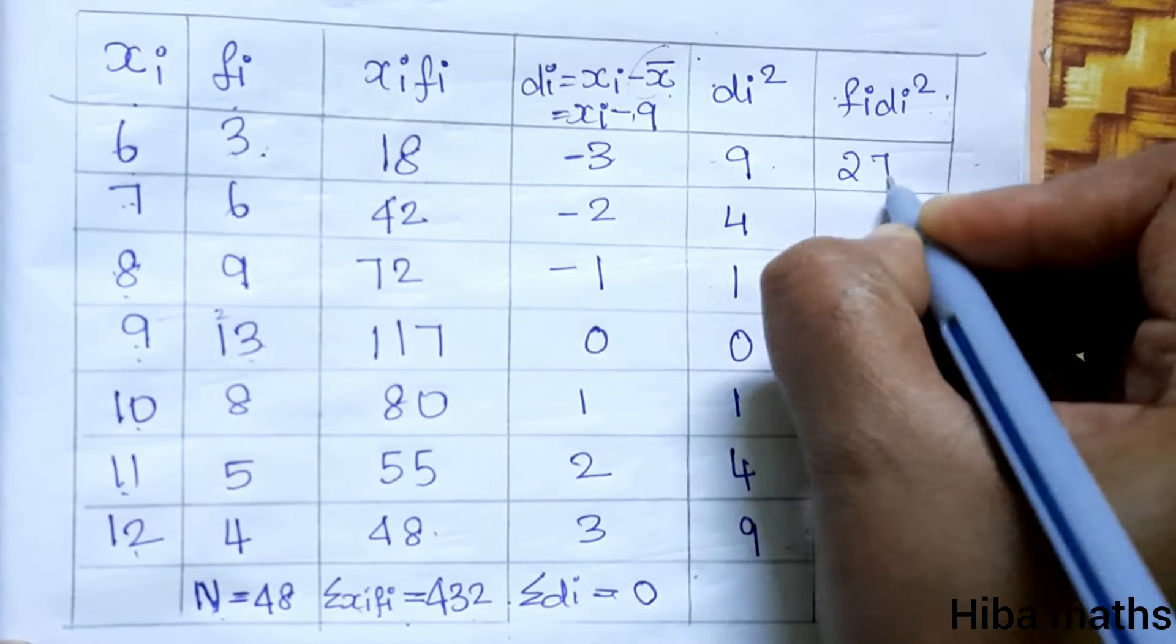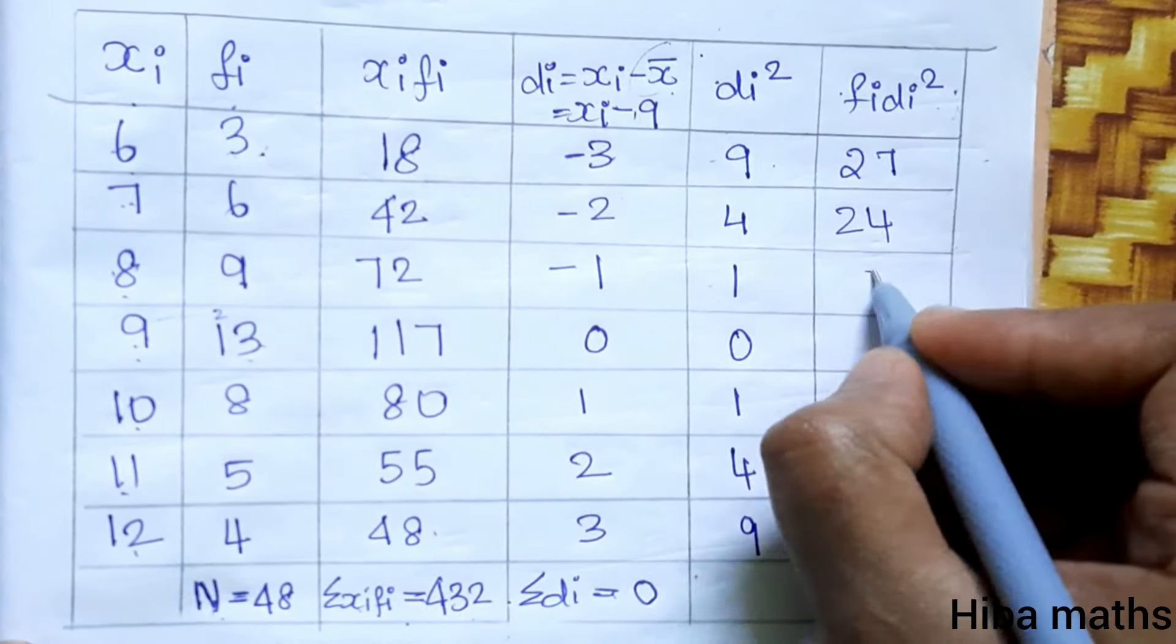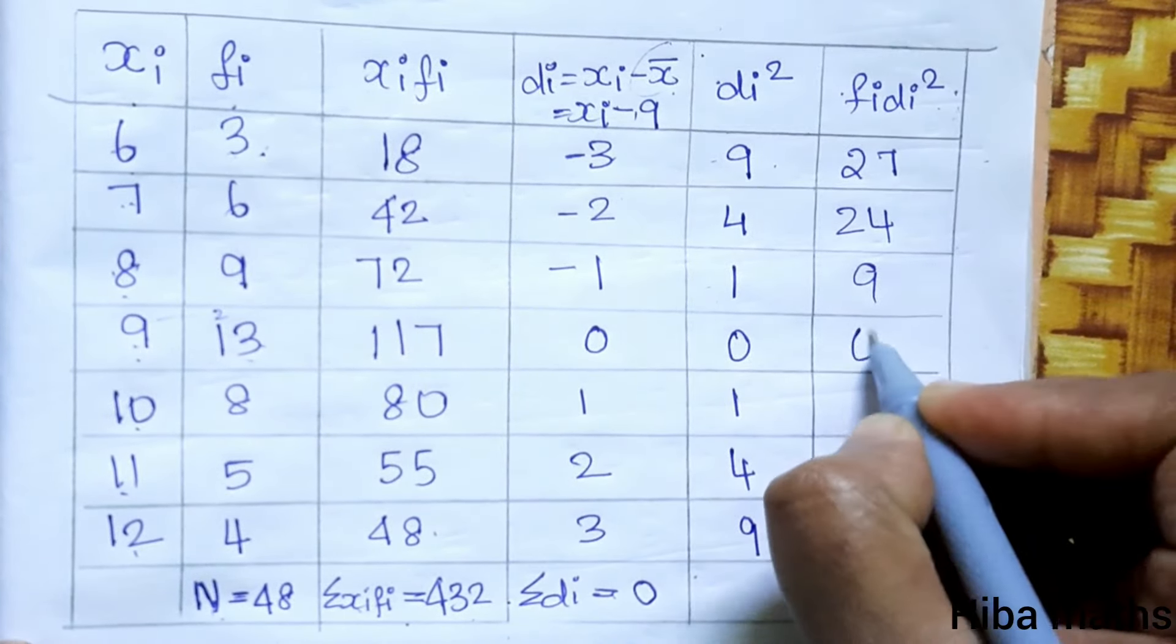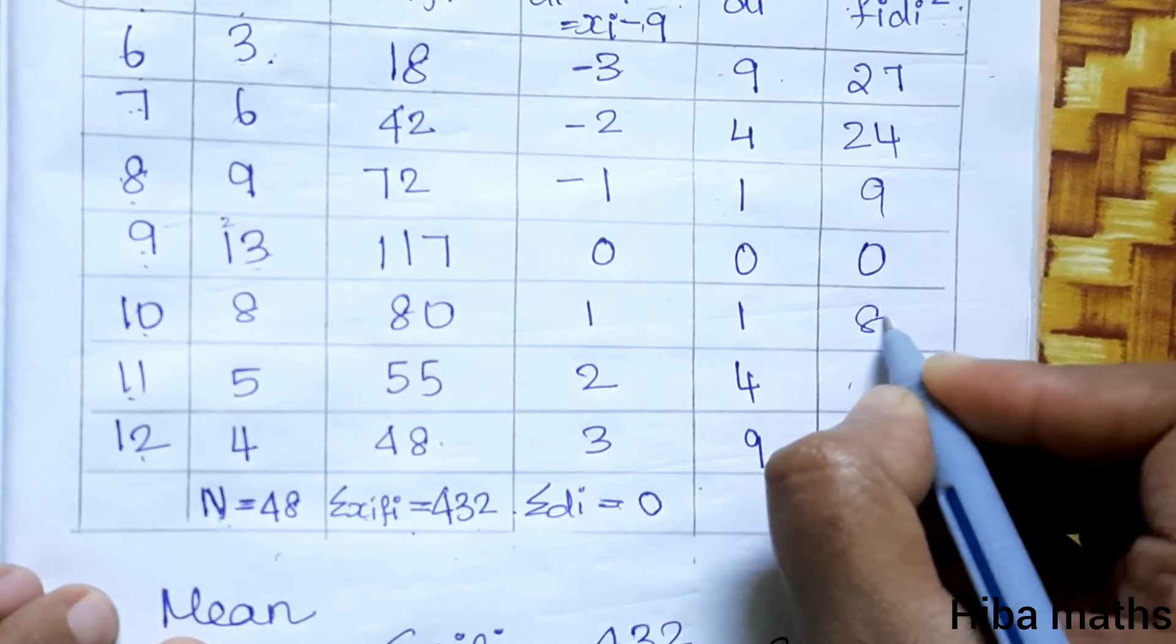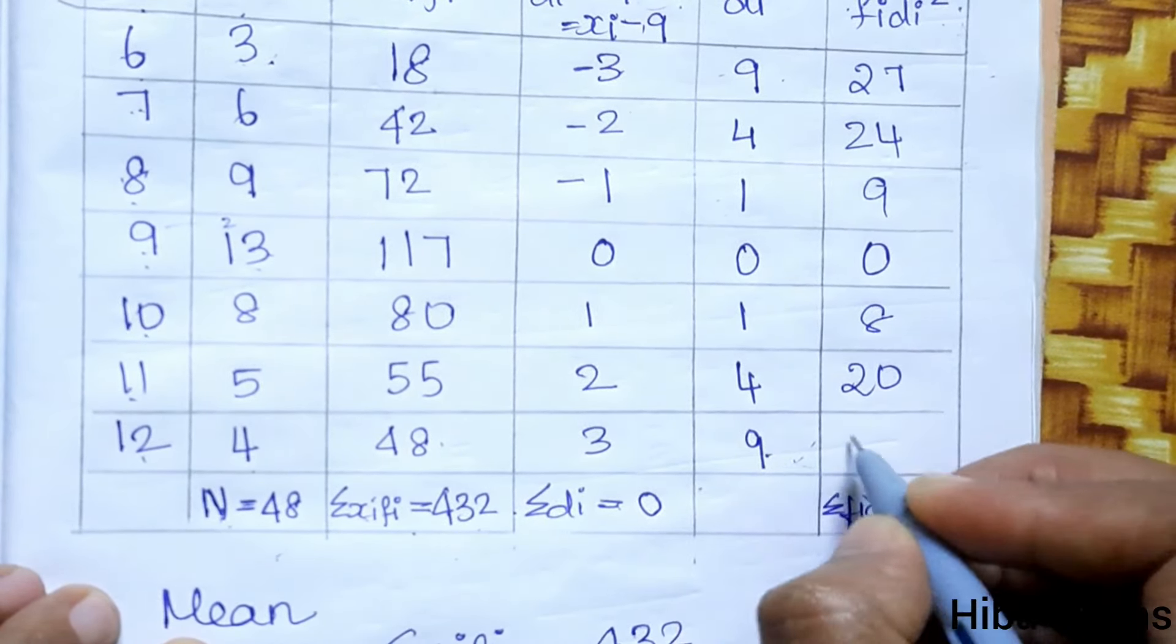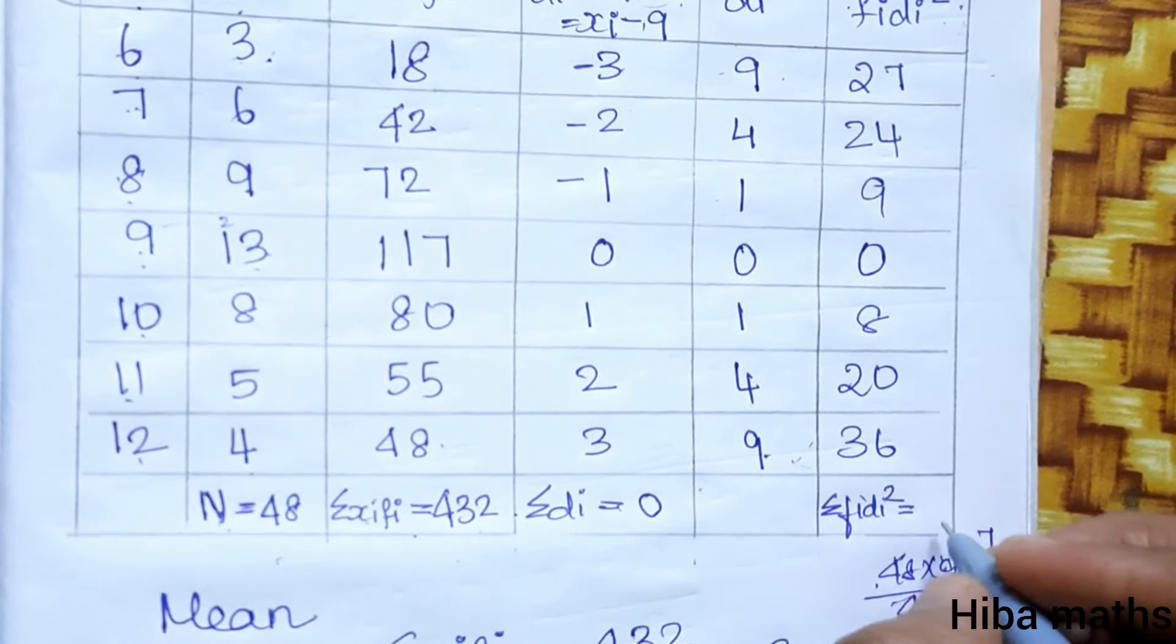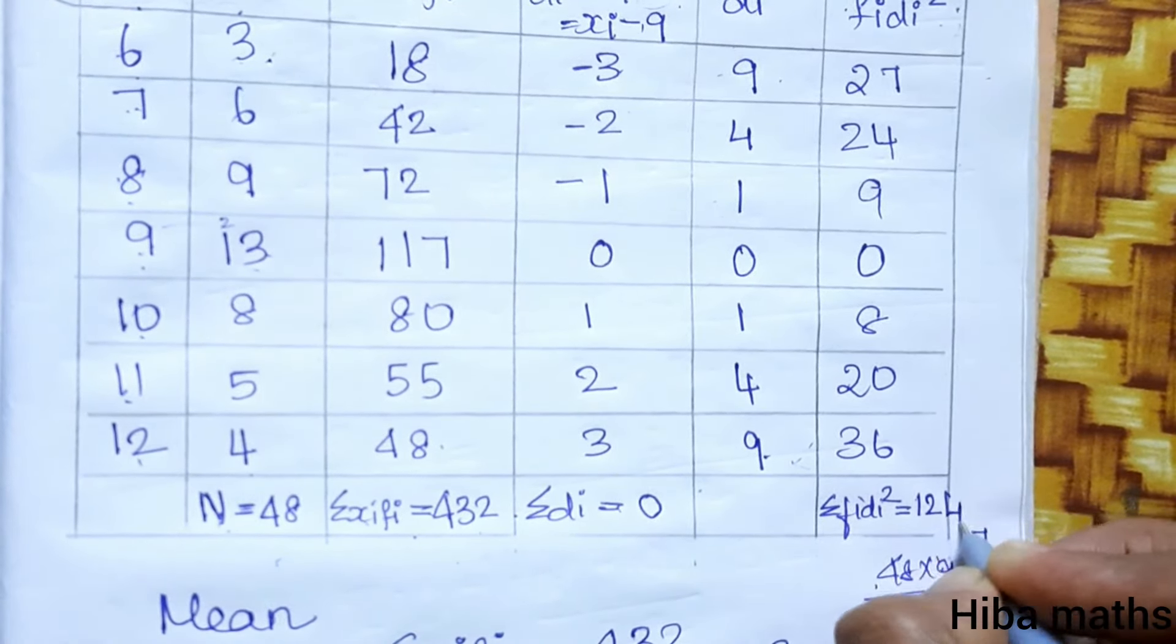Three times nine is 27. Six times four is 24. Nine times one is nine. Thirteen into zero is zero. Eight times one is eight. Five times four is 20. Four times nine is 36. The sum is 124.